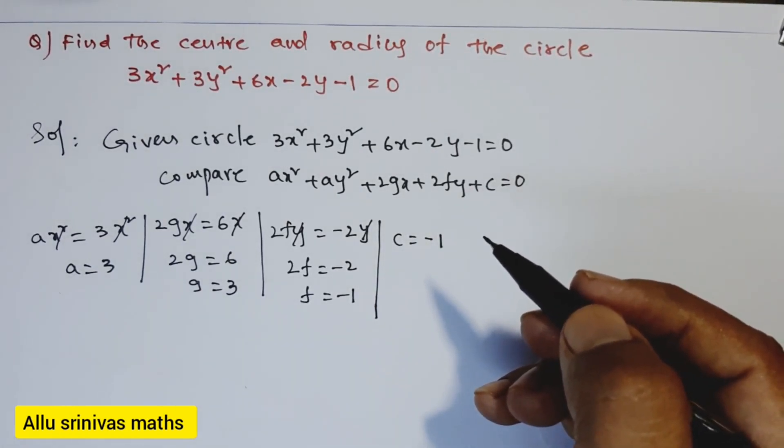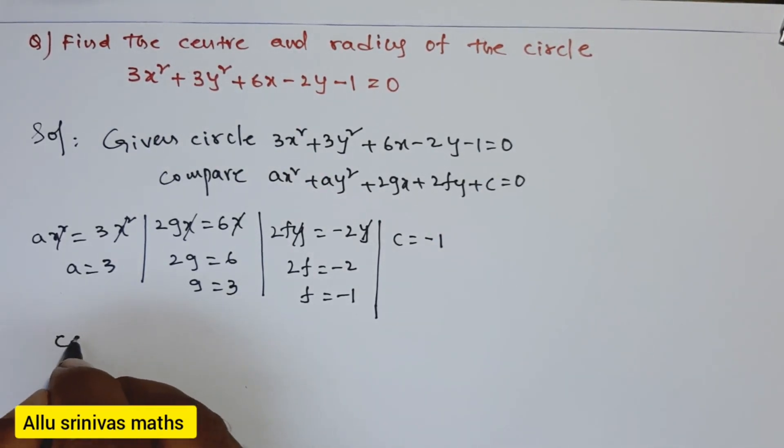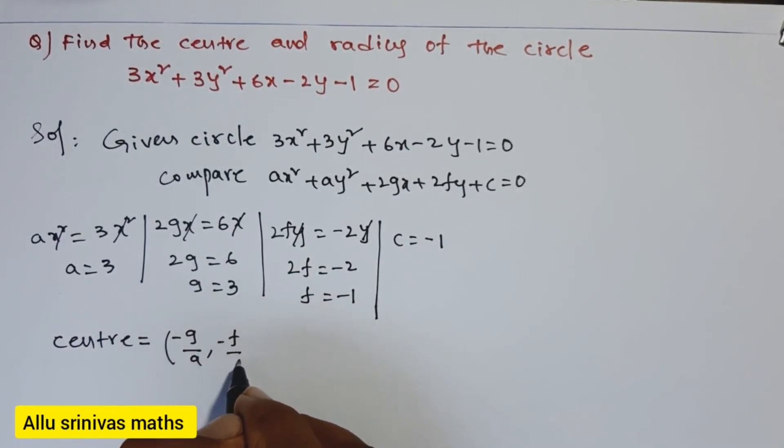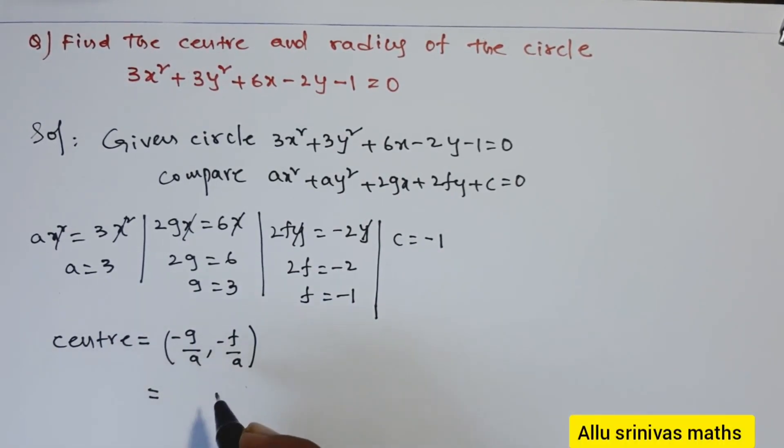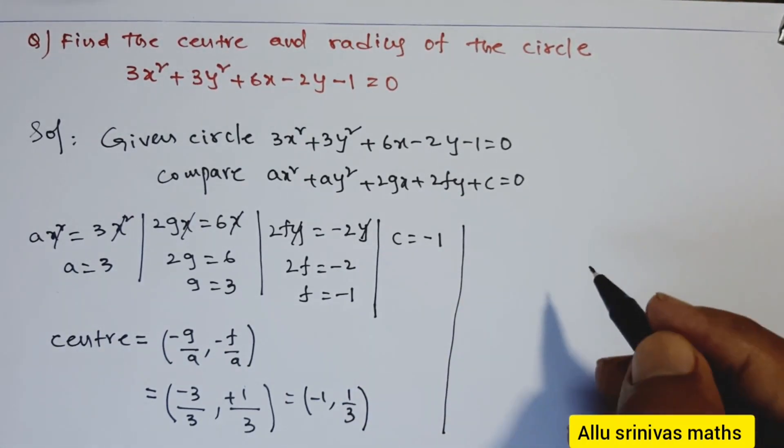Next, we write the formula for the center of the circle: (-g/a, -f/a). Substituting g, f, and a into this formula: -g/a = -3/3 = -1, and -f/a = -(-1)/3 = 1/3. So finally, the center of the given circle is (-1, 1/3).